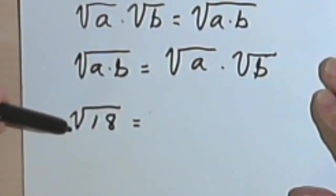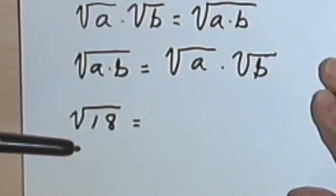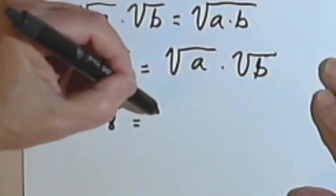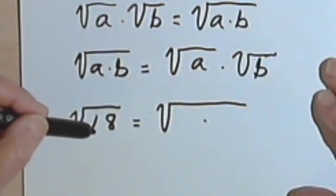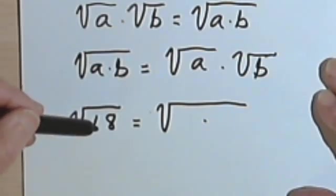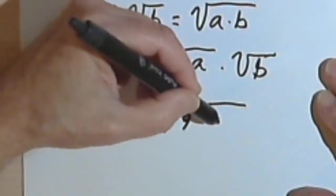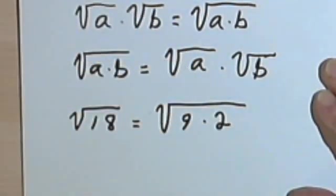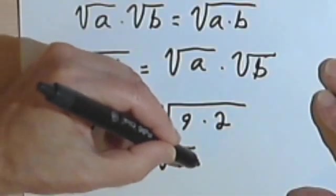Here's how we can use this. Let's say I'm given the problem: find the square root of 18. But 18 is not a perfect square. So I'm going to ask myself what two numbers can I multiply together — in other words, what factors of 18 can I find so that one of those factors is a perfect square. Well, 18 is 9 times 2. So let's rewrite the square root of 18 as the square root of 9 times 2.